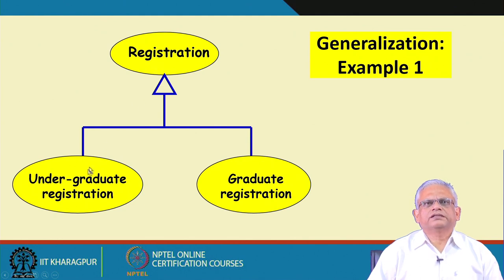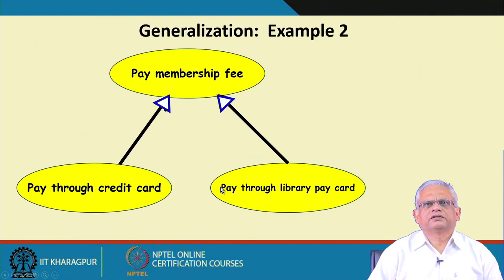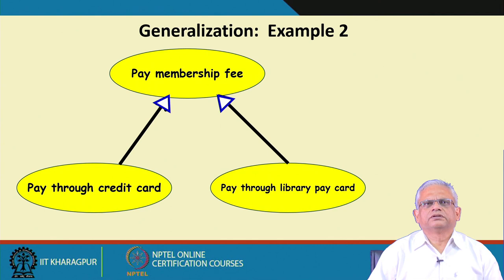Graduate students get a scholarship but do not stay in the hostel; undergraduate students stay in the hostel but do not get a scholarship. This is the only difference; otherwise the registration process is almost similar. So the similar things are done in the parent use case, and the extra things are done in the undergraduate and graduate registration child use cases. Another example: in a library, the membership fee payment procedure includes giving the member number and choosing the duration.